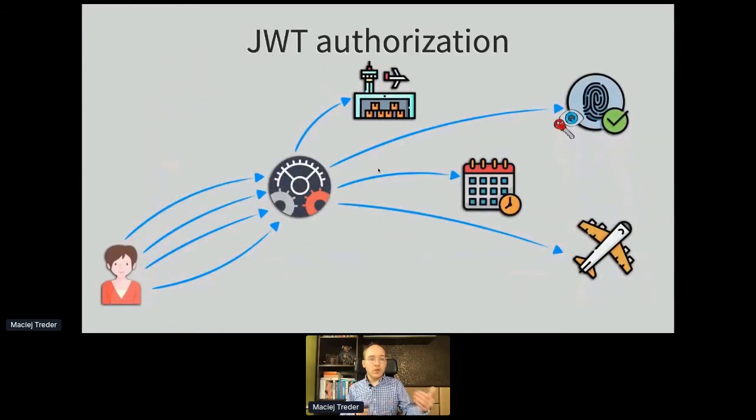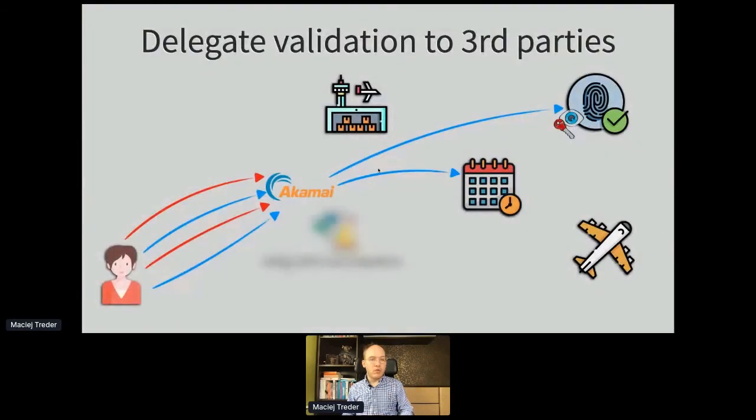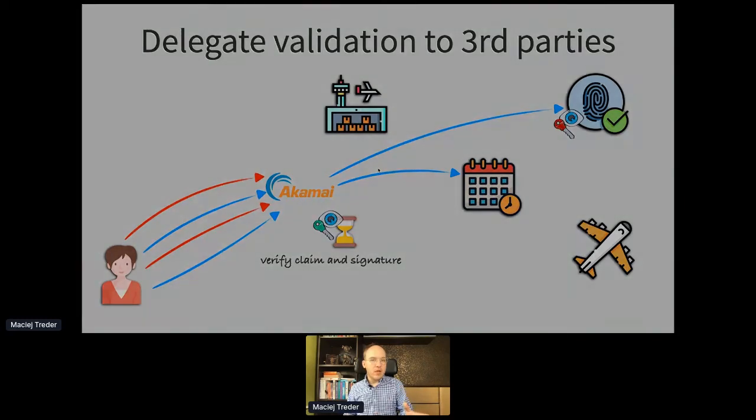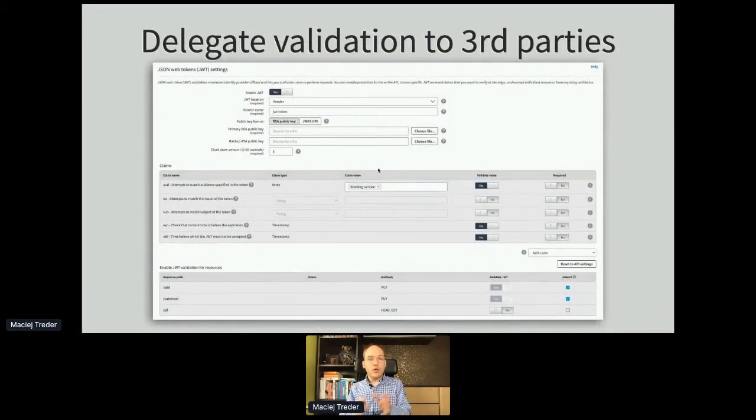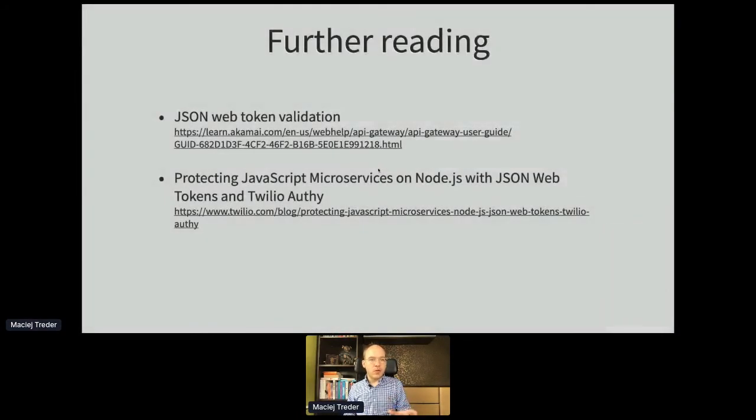Moreover, if you are using a Load Balancer, you can ask the Load Balancer to verify claims and signatures and offload the traffic within your services. And if you can use this in Load Balancer, you can delegate also this action to third parties like Akamai. Within Akamai we have a product called API Gateway where you can specify what is your API, which endpoints are protected by JSON Web Tokens, and we can validate those tokens on behalf of you. For further reading I strongly recommend you those two articles. The first one is about token validation in Akamai. The second one is about protecting microservices using JWT and Twilio Alfie.